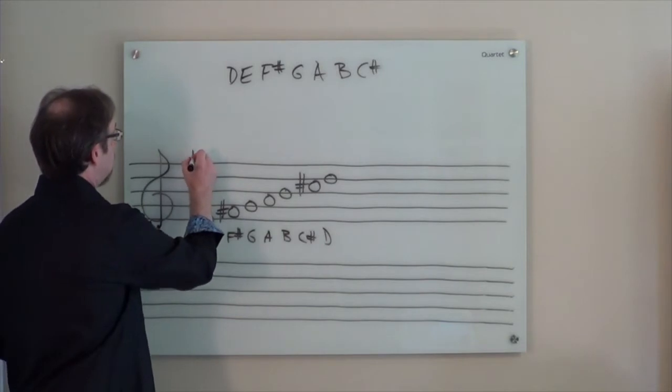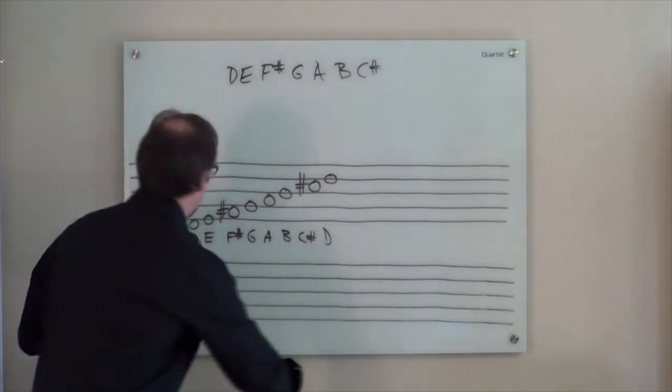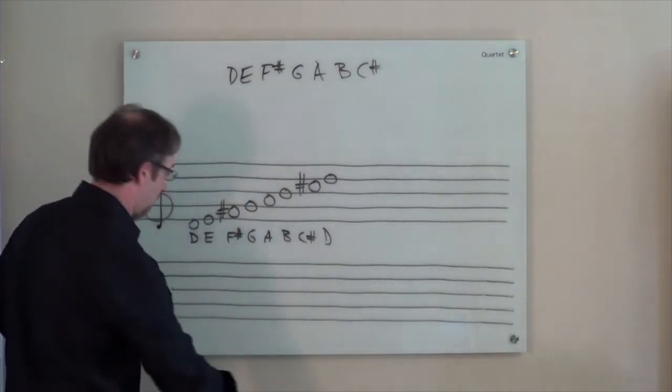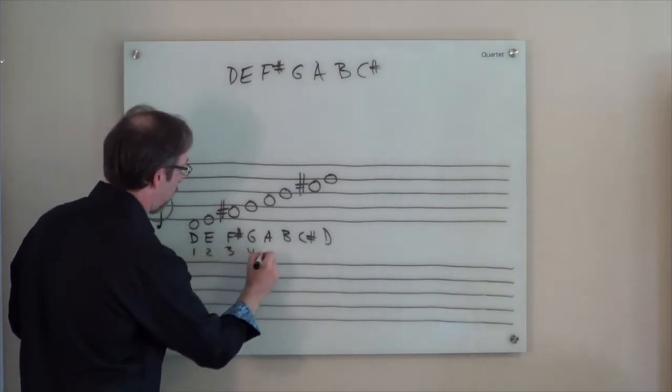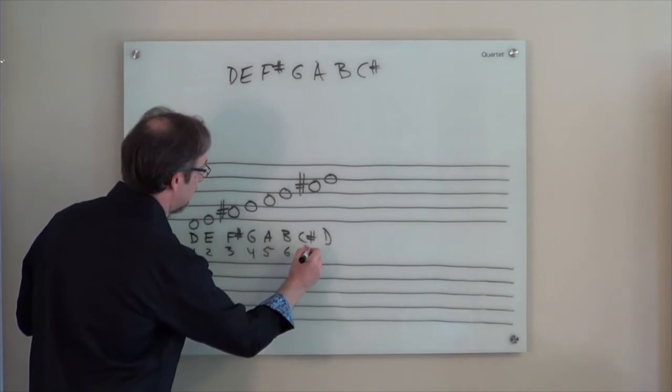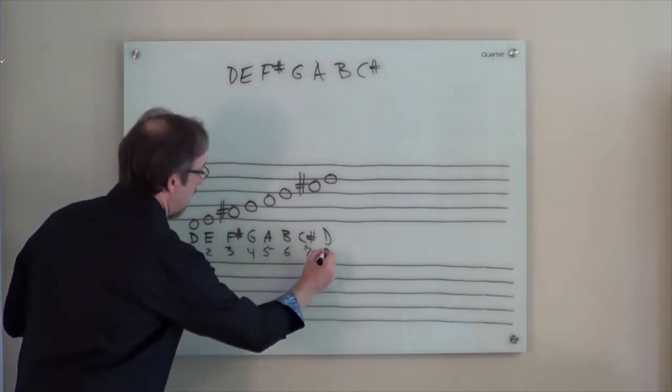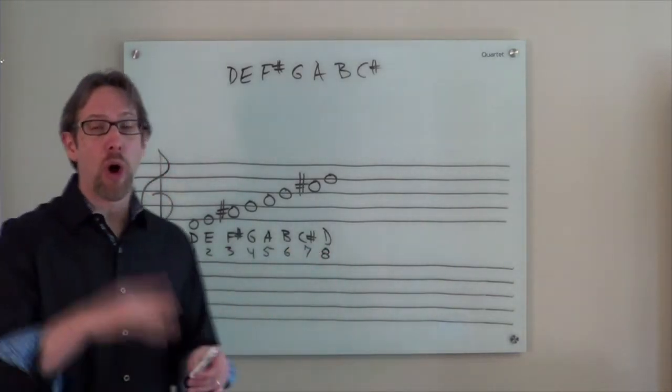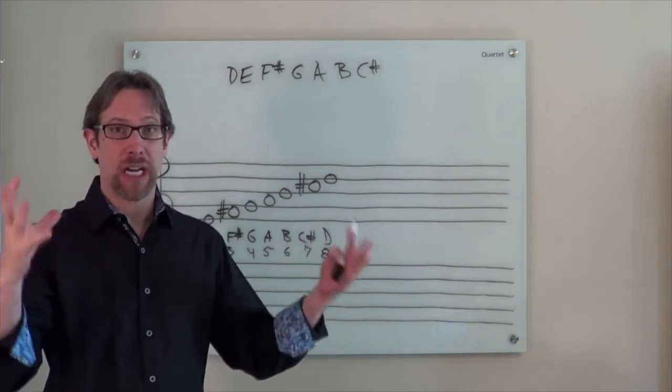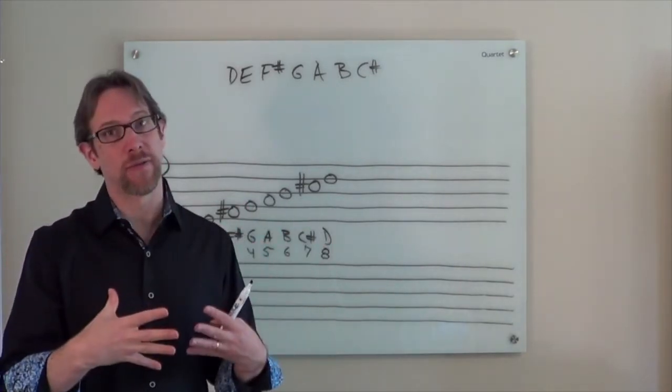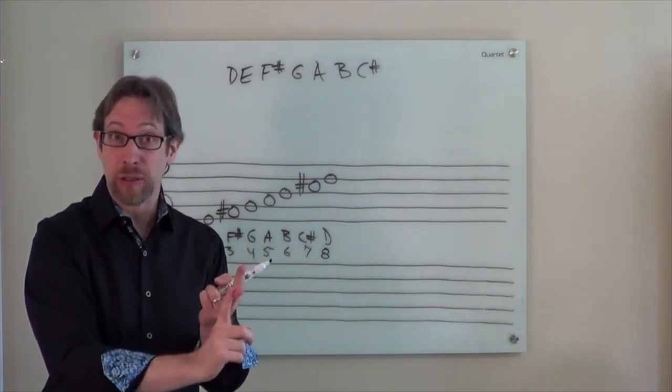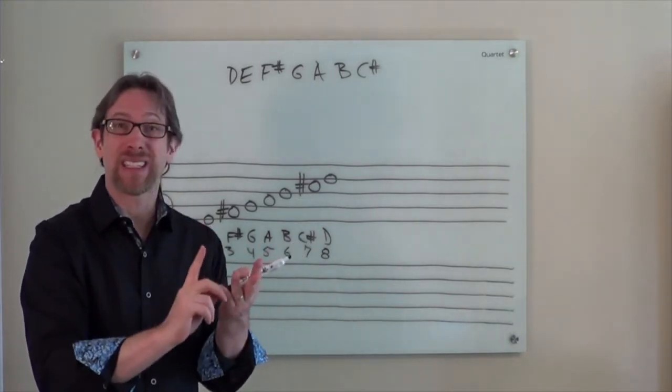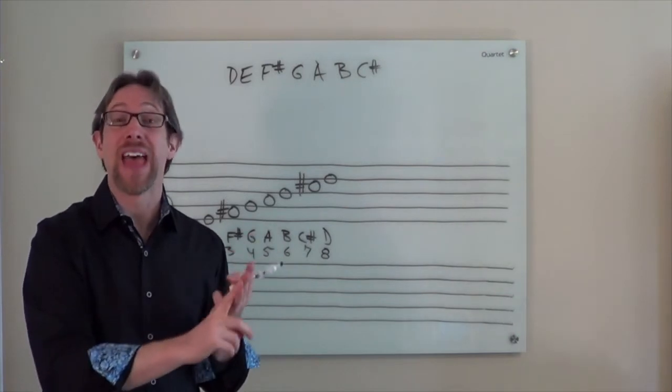I even take it one step farther. I write the scale degrees above it. Actually, I probably would not write above it here. I would probably write below. One, two, three, four, five, six, seven. You can write eight. So, that I'm also in my brain trying to put all these different pieces of information together. What it looks like notated, what the note name is using letters, and what scale degree it is within that key.